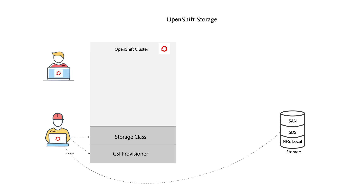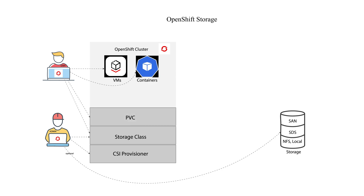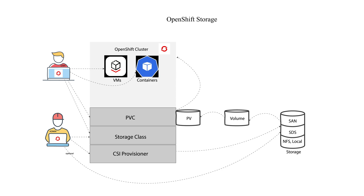Now let's bring our users into the mix. Users want to run their workloads that require storage, such as VMs or containers. Storage is requested via persistent volume claims, or PVC for short. The user also has an option to select a storage class, which is directly attached to its own storage backend. This is when a CSI provisioner makes an API call to the storage and, depending on the storage type, requests a LUN or volume, which the CDI sidecar turns into a PV, or persistent volume, and binds it to the PVC. Finally, when the VM or container gets scheduled, the CSI provisioner attaches the volume to the appropriate worker machine and ultimately the workload itself.